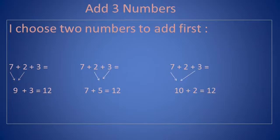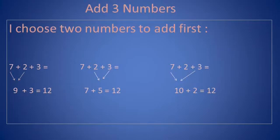The second way is 7 plus 5. The greater number is 7. Count on 5 times: 8, 9, 10, 11, 12. So the sum is 12. In the third way, it's 10 plus 2. The greater number is 10. Count on 2 times: 11, 12. The sum is 12.